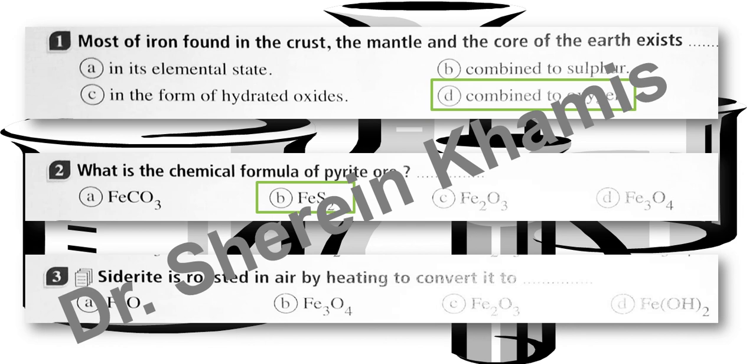Question number 3. Siderite is roasted in air — it is heated to convert it into what? The choices are: FeO, Fe3O4, Fe2O3, or Fe(OH)2. When we apply heating, we produce iron 3 oxide, Fe2O3.